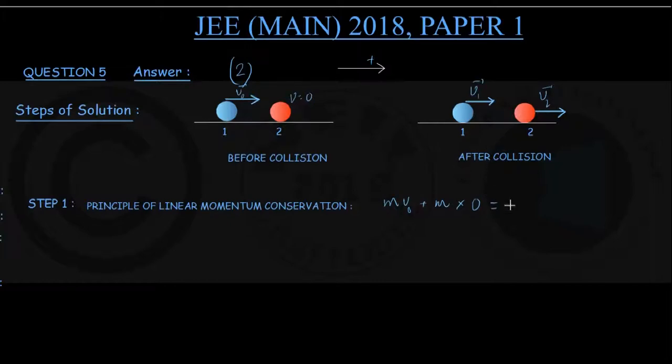This must equal momentum after the collision, so particle one's linear momentum is m into v1, and particle two's linear momentum is m into v2. This is the momentum before collision on the left-hand side and after collision on the right-hand side for the two-particle system.